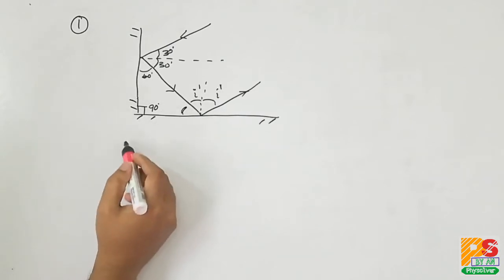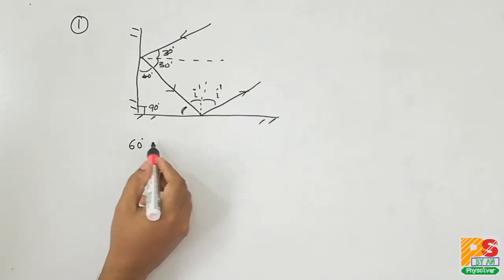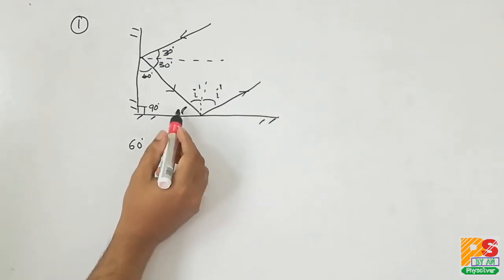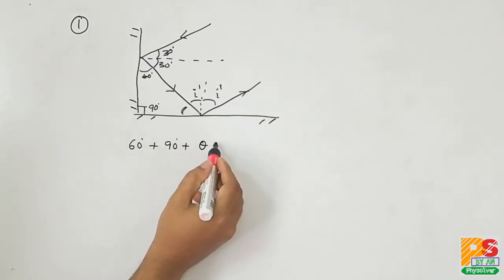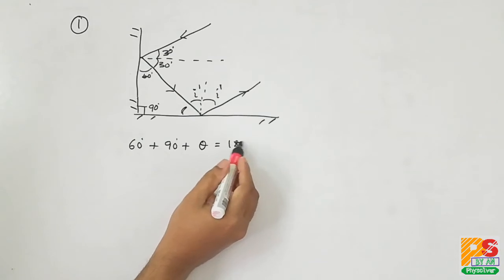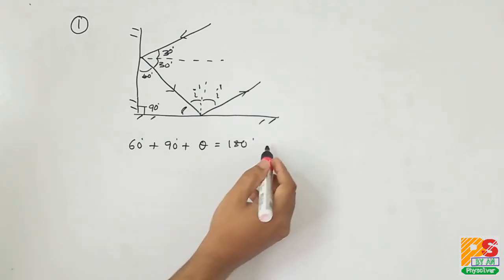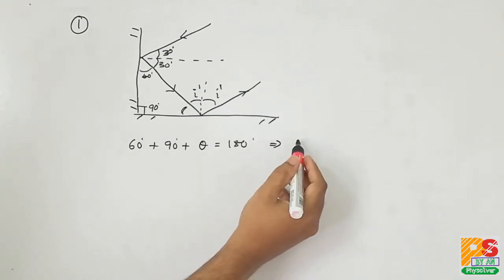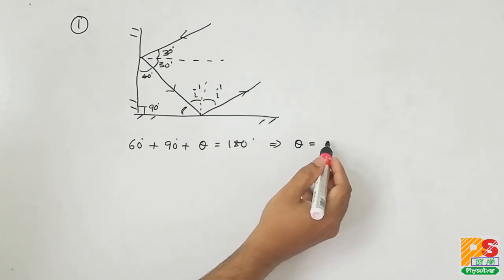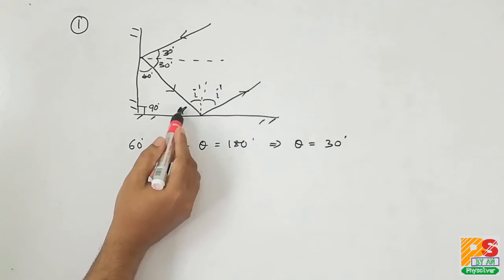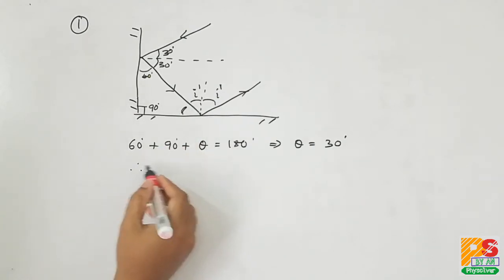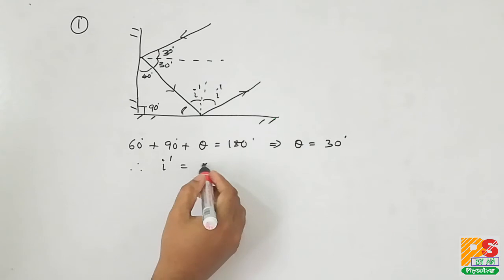We know the sum of the three angles of a triangle is 180 degrees. So let that angle be theta. Then obviously theta is 30 degrees. Therefore I' will be 90 degrees minus 30 degrees.